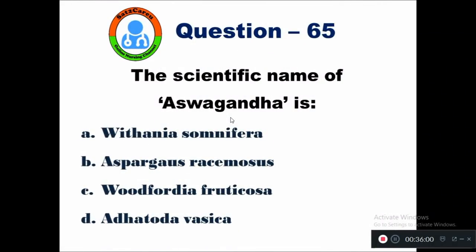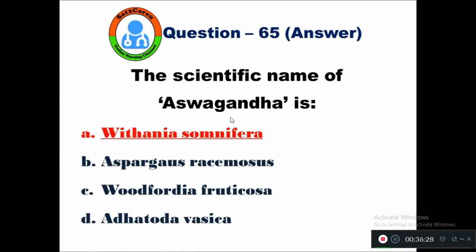Question 65: The scientific name of ashwagandha is — option A Withania somnifera, B Asparagus racemosus, C Woodfordia fruticosa, D Adhata basica. The scientific name of ashwagandha is Withania somnifera.